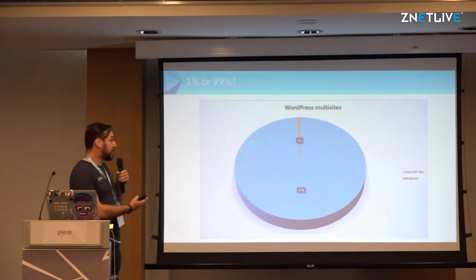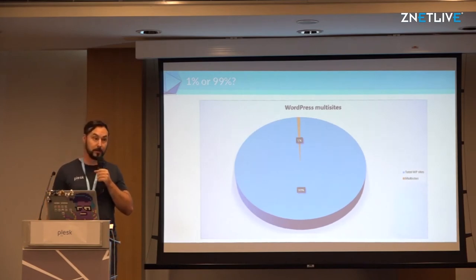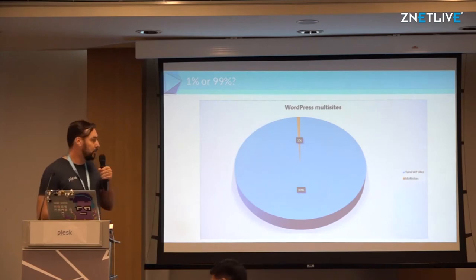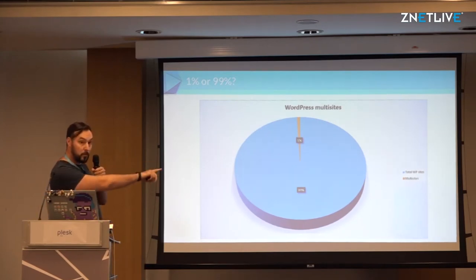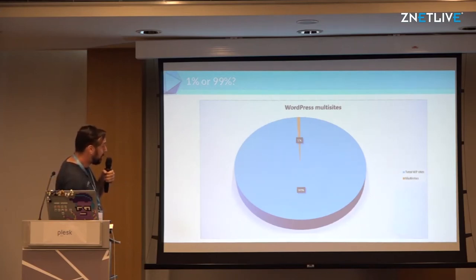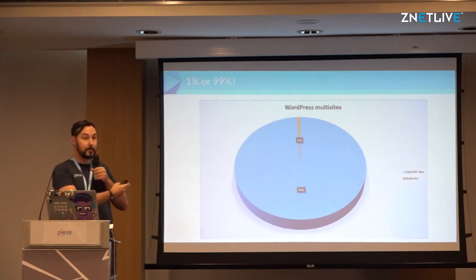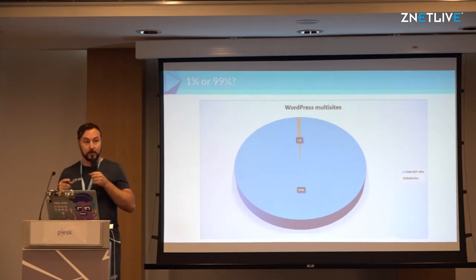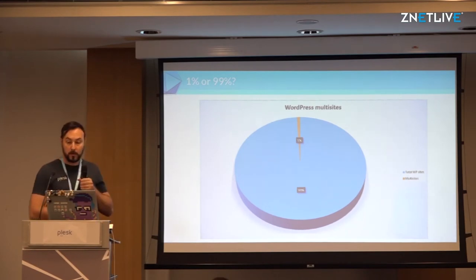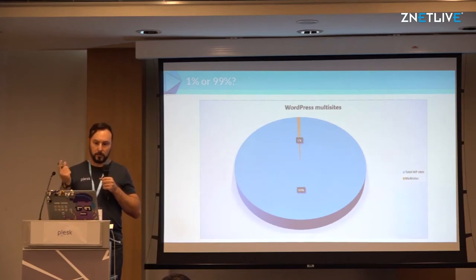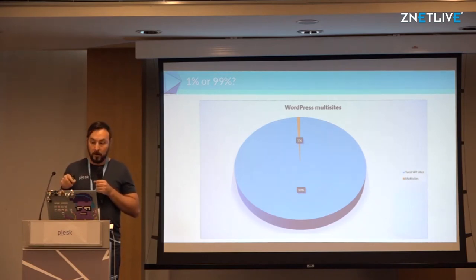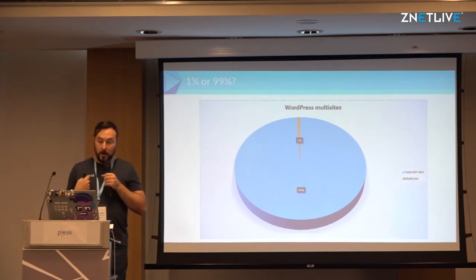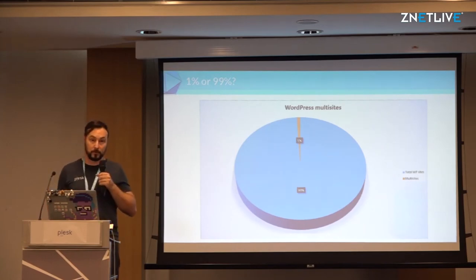Similarly, on the WordPress Toolkit side, there's a question about multi-site support that I get sometimes. But when I look at usage stats — the blue one is the total amount of WordPress sites, and that small yellow thingy is multi-sites — it's very hard to argue spending our limited development efforts on WordPress multi-site support. Even though 1% of sites is still a huge number in absolute terms, we would rather focus on the stuff the majority of people need, and we have a lot of ideas that could make life better for the majority of users, not just 1%.